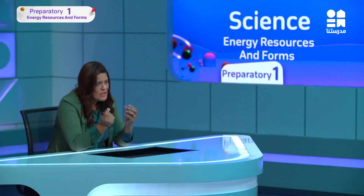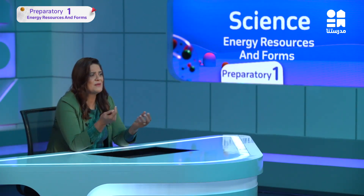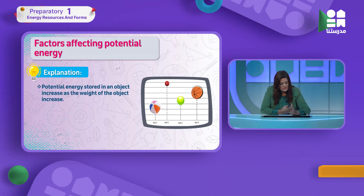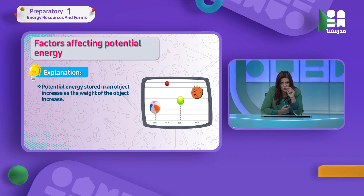The spheres are all identical, but the work done for one sphere is doubled for two spheres and tripled for three spheres. So the effort increases as the number of balls increases. This means: potential energy stored in an object increases as the weight of the object increases. The weight is doubling as we add more balls.